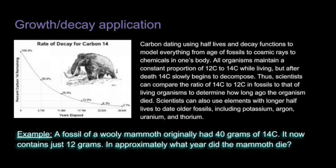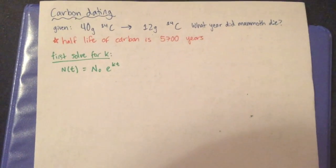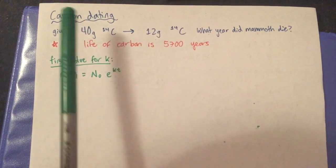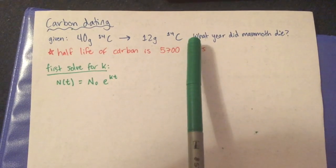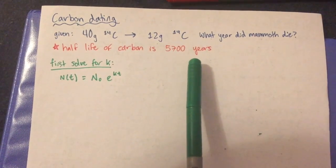For my example, a fossil of a woolly mammoth originally had 40 grams of carbon-14 and now contains just 12 grams. In approximately what year did the mammoth die? Here's what we know: we originally started with 40 grams of carbon-14 and are now at 12 grams, and that the half-life of carbon is 5,700 years.